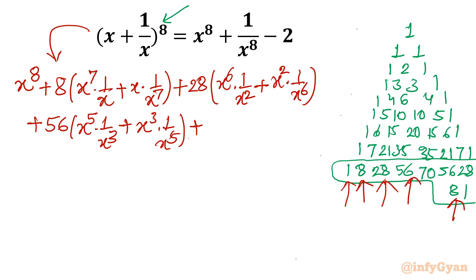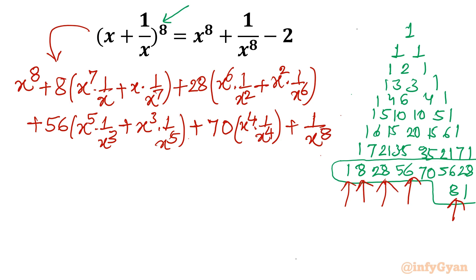Now only 70 is left and one last term. For 70, I will write x^4 times 1/x^4 — this will cancel out — and the last term is 1/x^8. Now for the right hand side, I will write: x^8 + 1/x^8 minus 2.